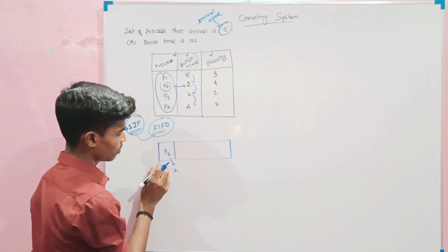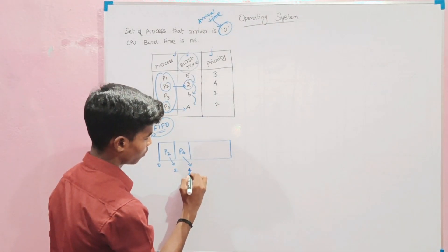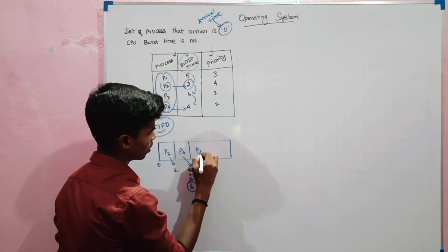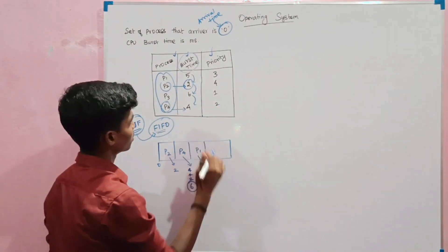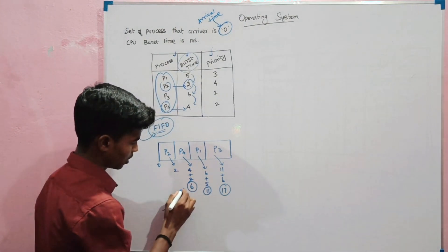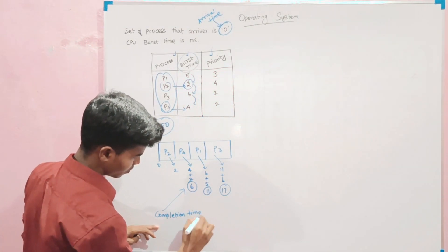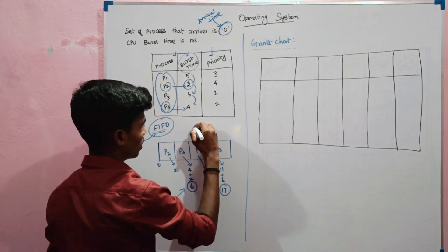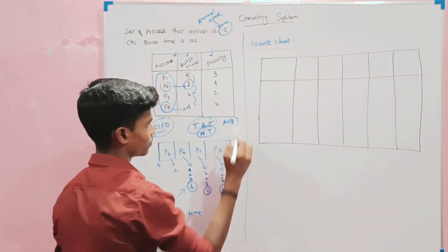SJF is slightly different. Starting at initial state 0, we pick the minimum value first — minimum value is 2, so P4 gets value 2. Then add 4: 4 plus 2. The third minimum value is 4, then add 5 for P1. 6 plus 5 from the previous state 10 plus 5 equals 11, then last P3: plus 6 gives 17. You find the completion time, then the Gantt chart, and the average turnaround and waiting times.